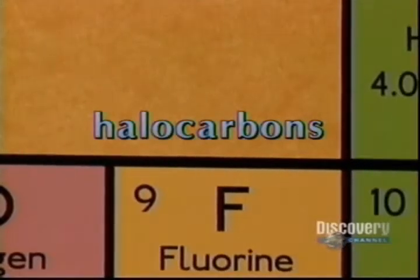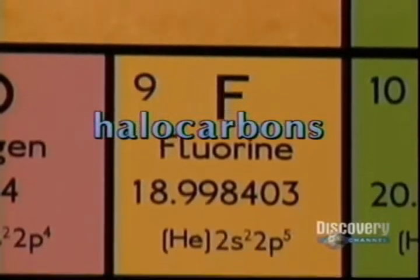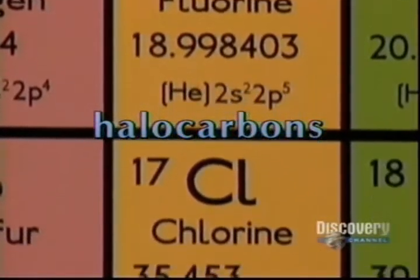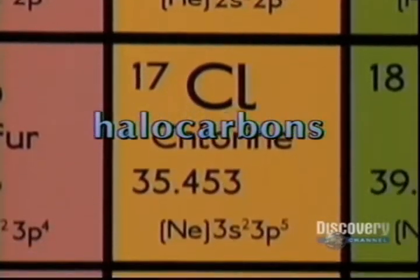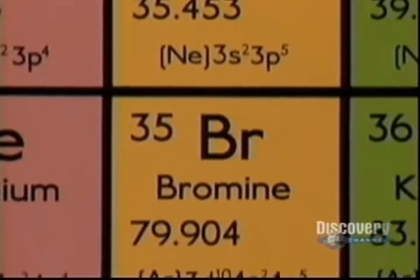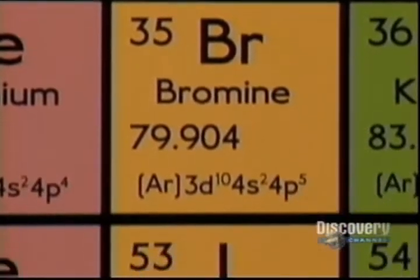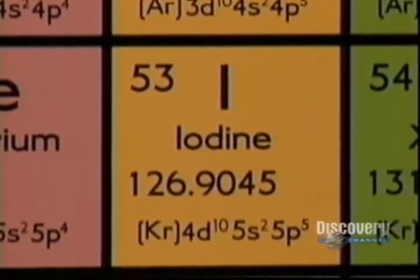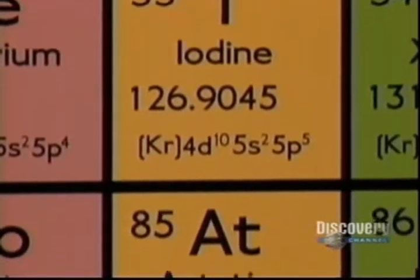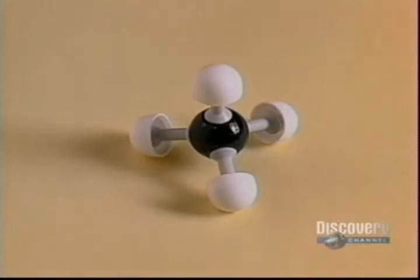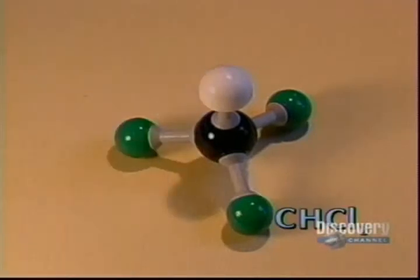Halocarbons are hydrocarbon derivatives that have a halogen atom as their functional group. Atoms from the halogen group take the place of hydrogen atoms. CHCl3 has a structure similar to methane, but three chlorine atoms have replaced three of the hydrogen atoms to make trichloromethane.